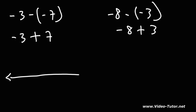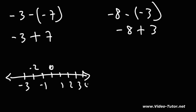Now let's perform the operations using a number line. Starting with negative 3, we're going to add 7 units, so we travel 7 units to the right — negative 2, negative 1, 0, 1, 2, 3, 4. So negative 3 plus 7 is 4.